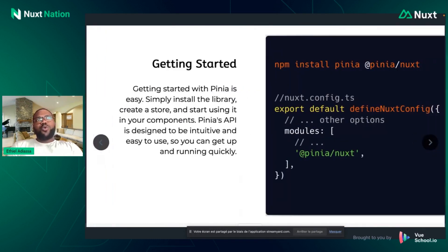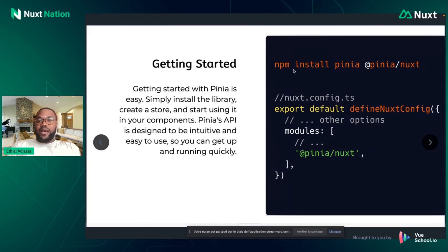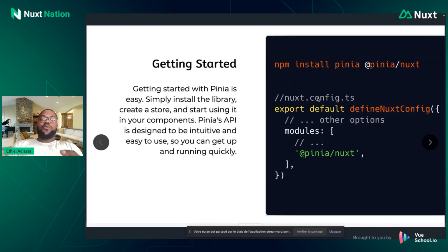How do you install Pinia and use it in your Nuxt app? First, you run npm install pinia and also install the Pinia module for Nuxt. After that, in your nuxt.config.ts file — which is a TypeScript file — you register the Pinia module.